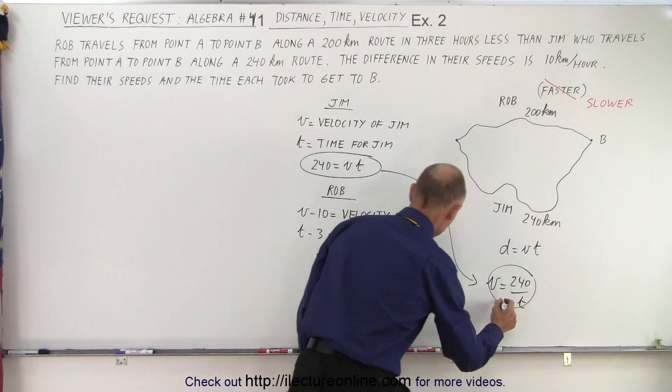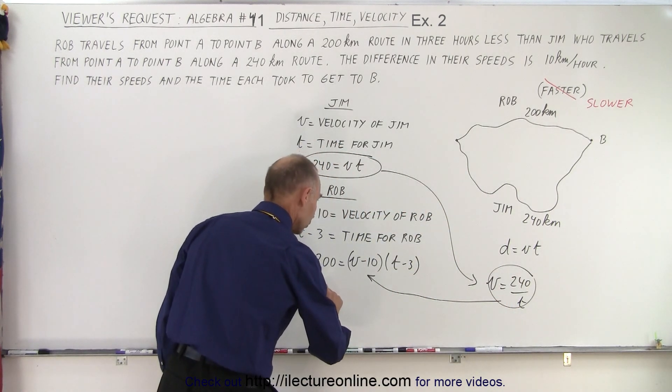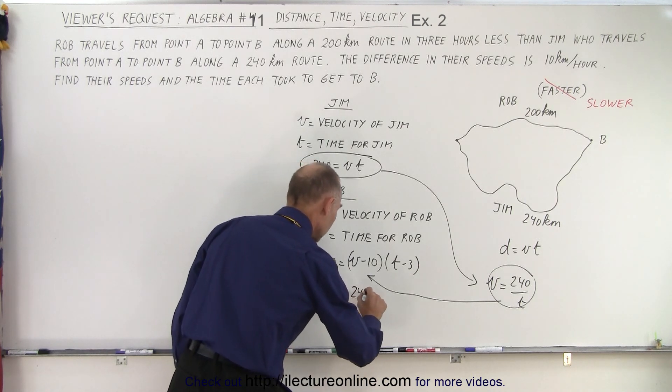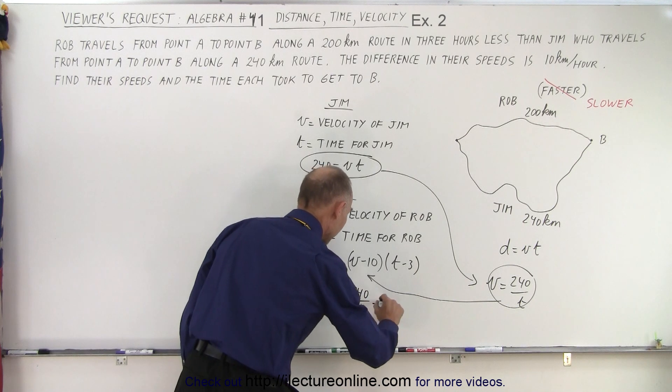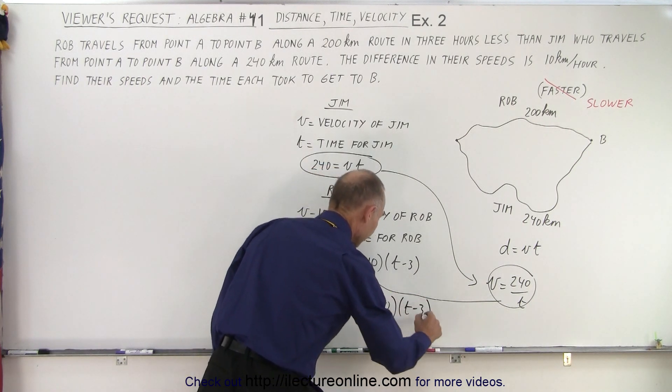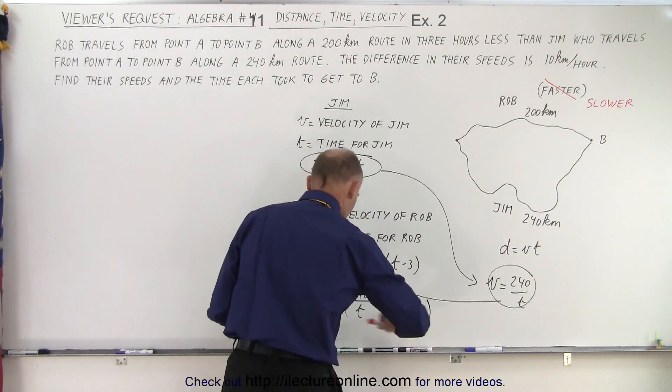So we're going to replace that into our equation right here. And so we end up with 200 equals 240 divided by T minus 10, times T minus 3.